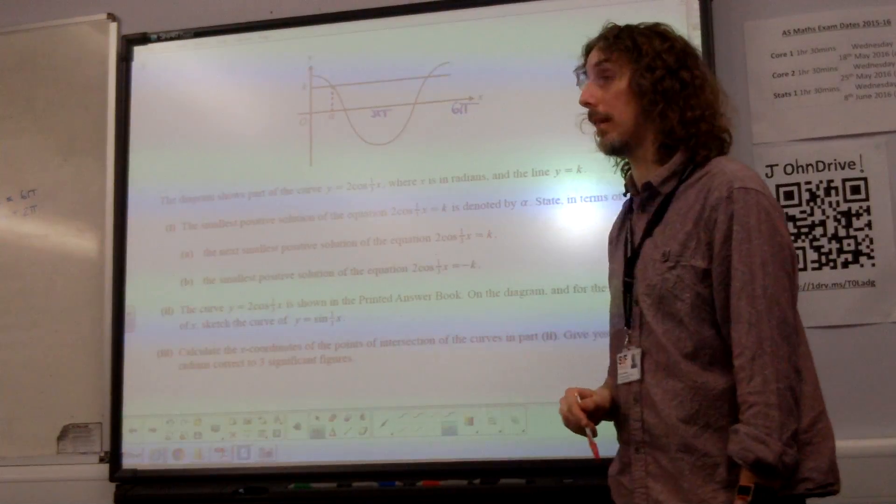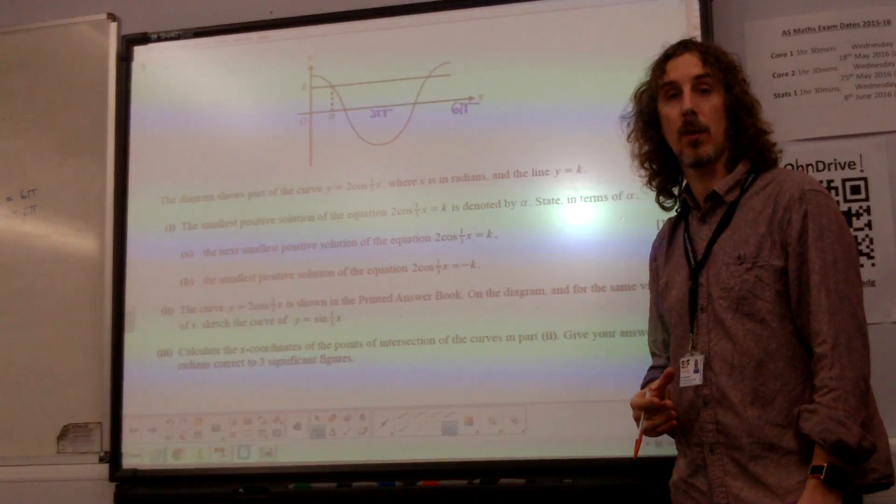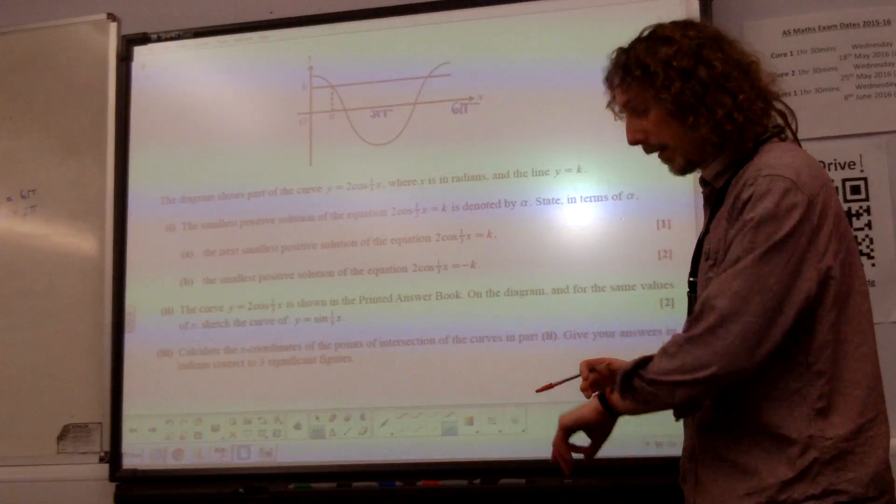That point is normally pi, isn't it? That must be 3 pi, because it's 3 times as far along. So let's think about what the symmetry in the graph is doing now.